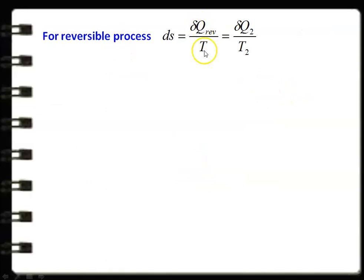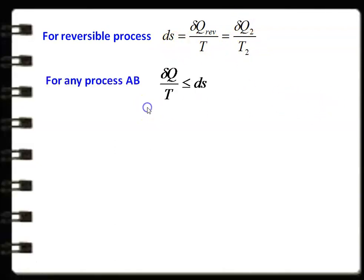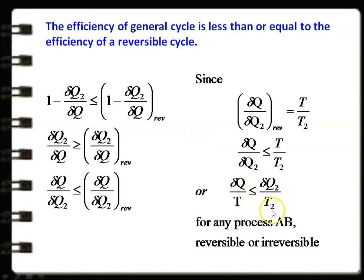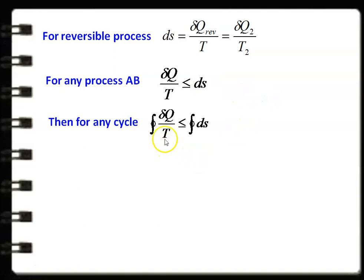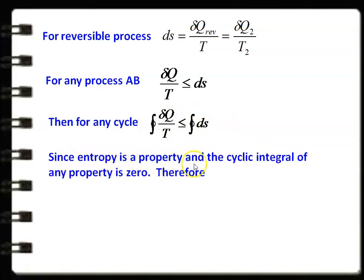For a reversible process, δQ/T equals dS, the change in entropy. So δQ₂/T₂ equals dS. Therefore, δQ/T is less than or equal to dS. For any cycle, integrating: the cyclic integral of δQ/T is less than or equal to the cyclic integral of dS. Since entropy is a property and the cyclic integral of any property equals zero, therefore the cyclic integral of δQ/T is less than or equal to zero.